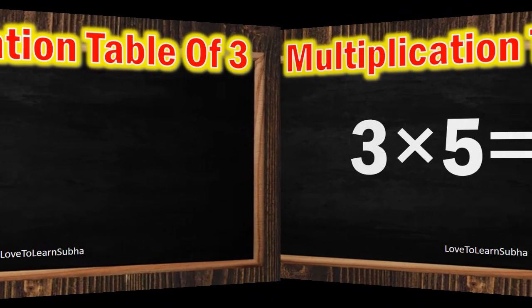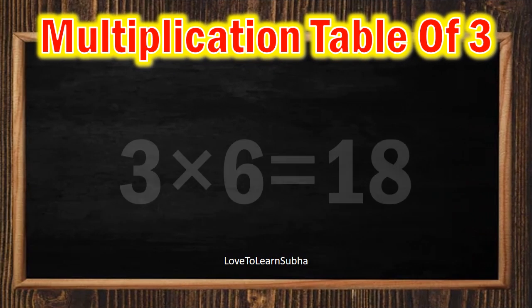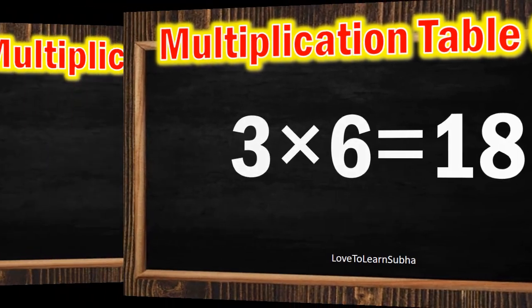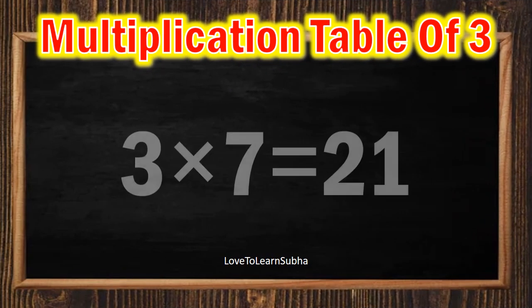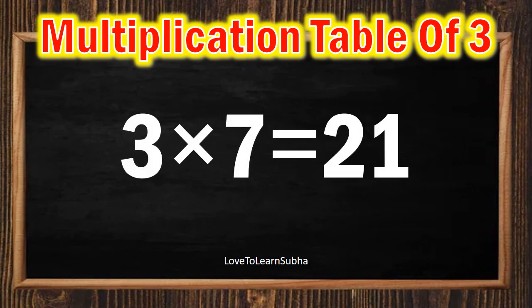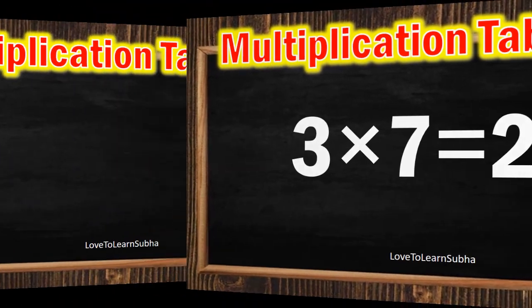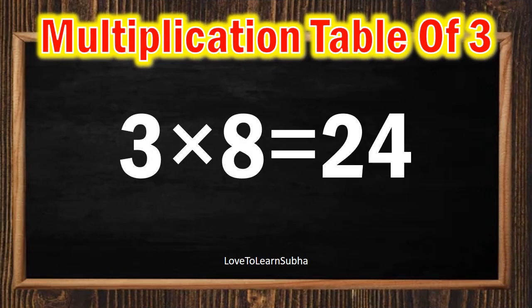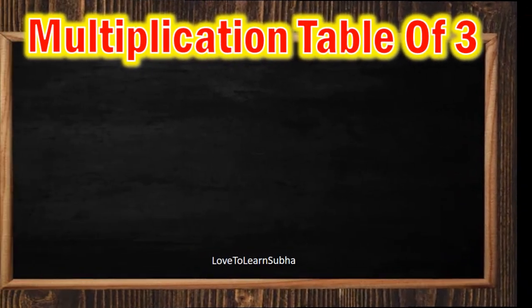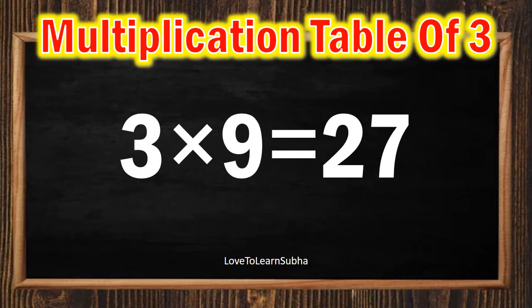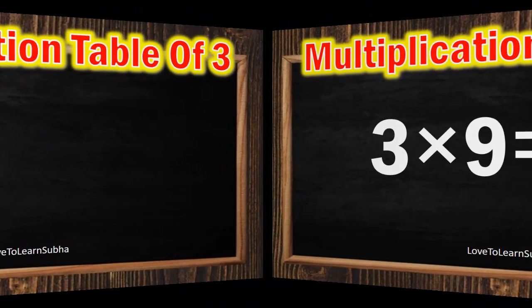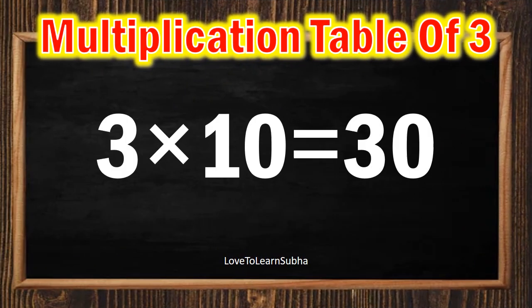3 6s are 18, 3 7s are 21, 3 8s are 24, 3 9s are 27, 3 10s are 30.